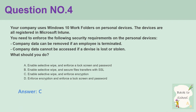Question number 4. Your company uses Windows 10 work folders on personal devices. The devices are all registered in Microsoft Intune. You need to enforce the following security requirements on the personal devices: company data can be removed if an employee is terminated, and company data cannot be accessed if a device is lost or stolen. What should you do? A. Enable selective wipe, and enforce a lock screen and password. B. Enable selective wipe, and secure file transfers with SSL. C. Enable selective wipe, and enforce encryption. D. Enforce encryption and enforce a lock screen and password. Answer: C.